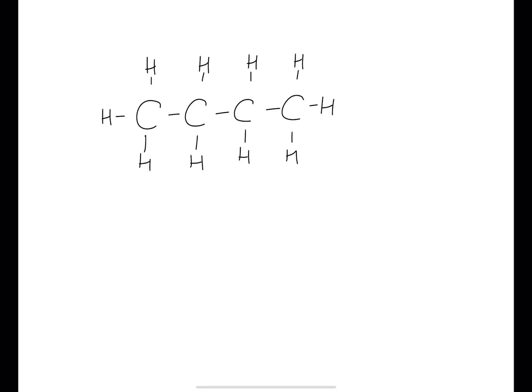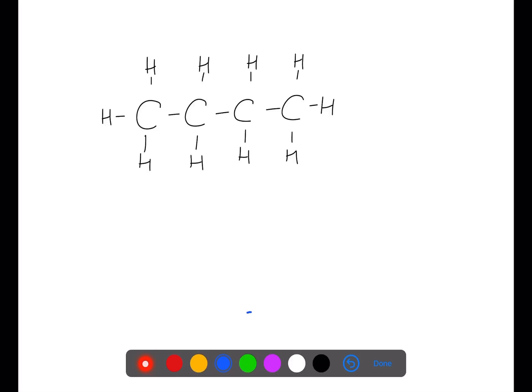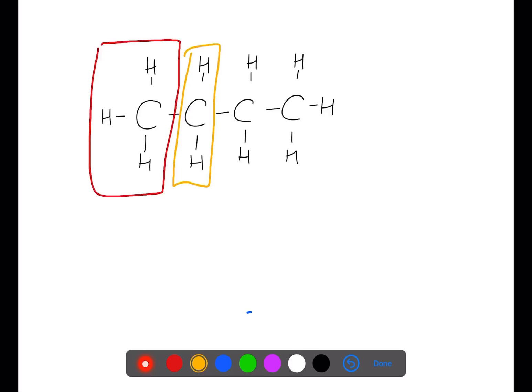Hi and welcome back to my channel. Today we're going to be looking at short and structural formula. Short and structural formula allows us to write out the full structural formula of a molecule without showing the bonds. To be able to do this we need to chop the molecule up into the different sections, and we do this by looking at the carbons and the atoms attached to them.